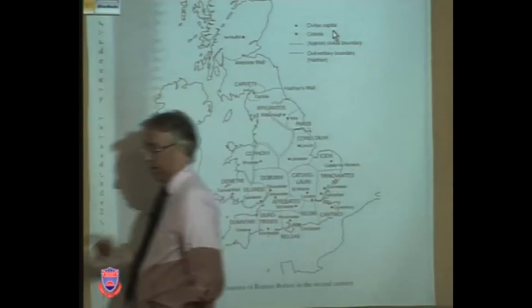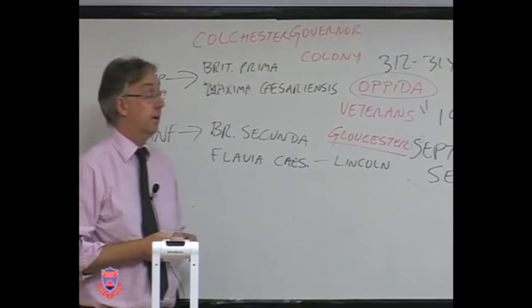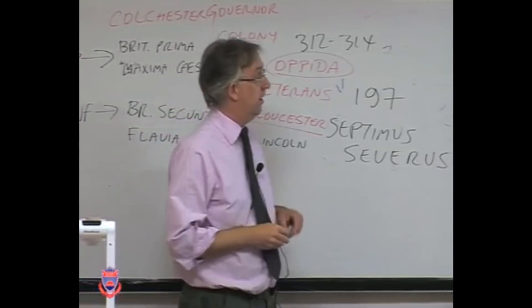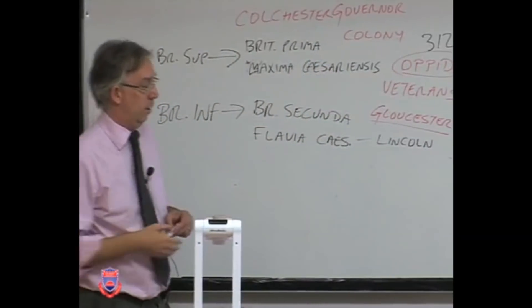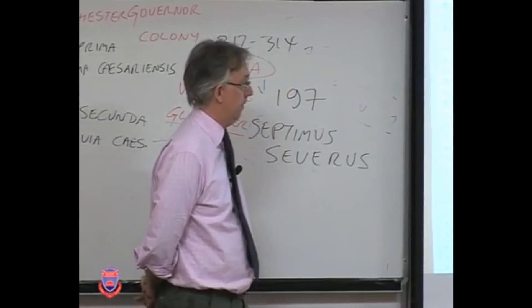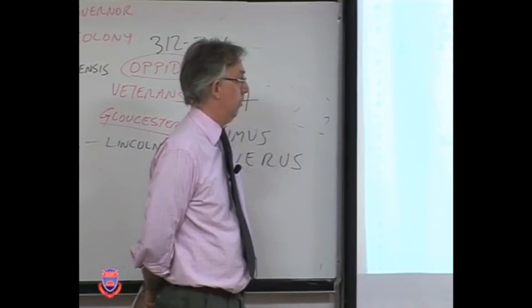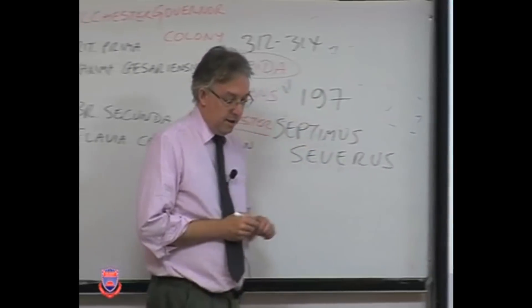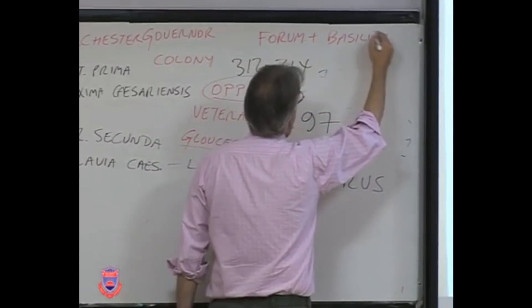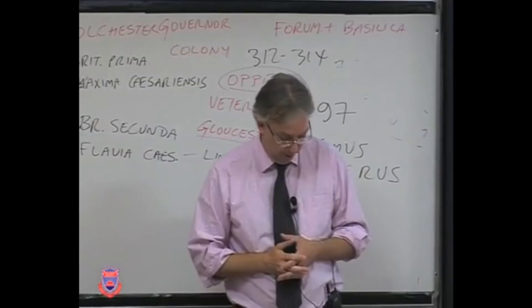The civitas capitals were often — not always — based on the previous oppidum of a particular civitas, so they would build actually on top of or very close to the previous British settlement. This imposes a certain degree of continuity and helps the Romans encourage the British to feel continuity of power. Most of these towns have been excavated, though not perfectly, because there's usually a modern city or town on top of them.